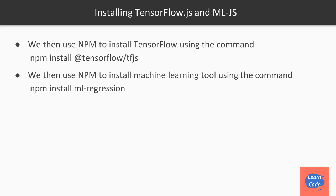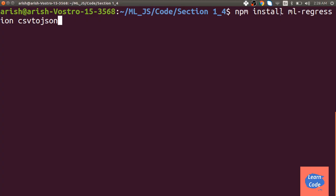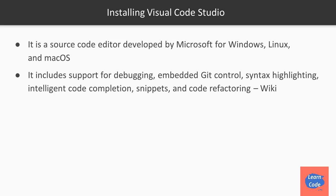I'm also installing another library called csv2json, which we might need later in the course. To write and debug our code, we use Visual Studio Code, a really powerful editor developed by Microsoft, available for Windows, Linux, and Mac OS. It supports debugging, embedded Git control, syntax highlighting, intelligent code completion, snippets, and code refactoring — and the best part, it's completely free.